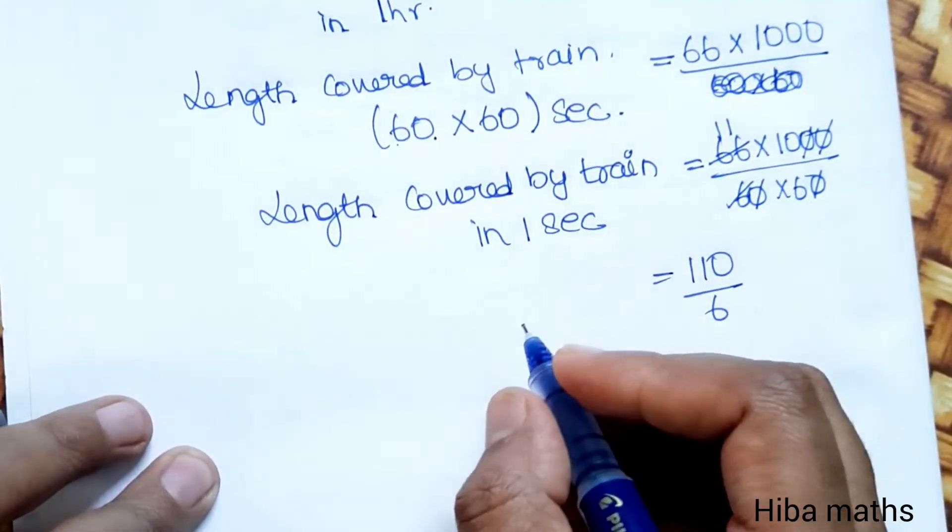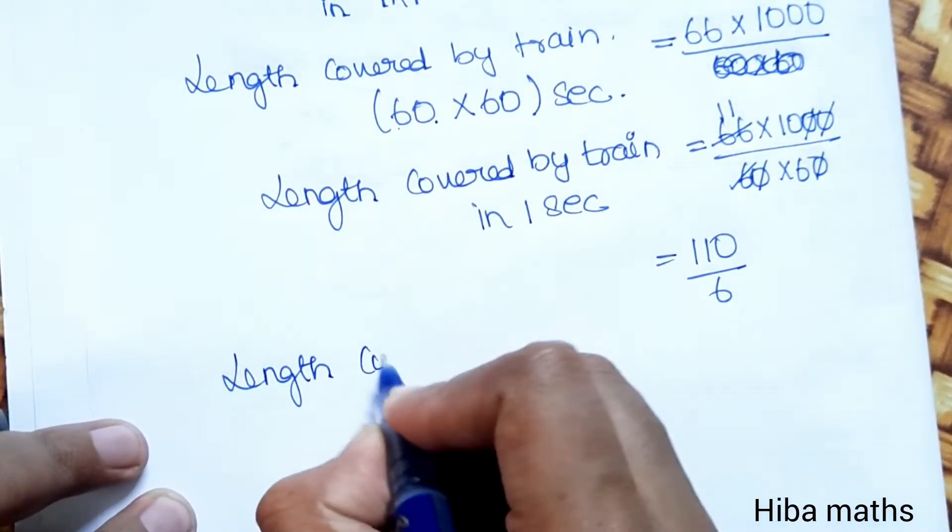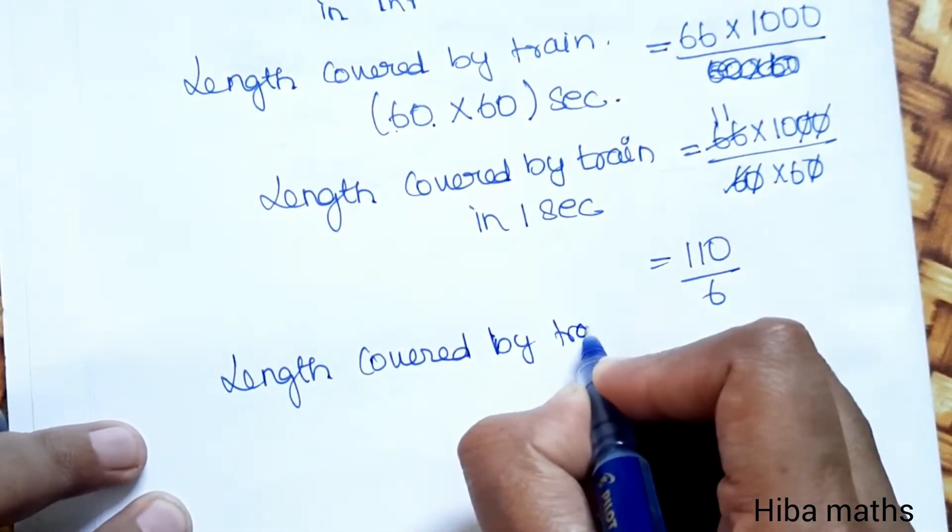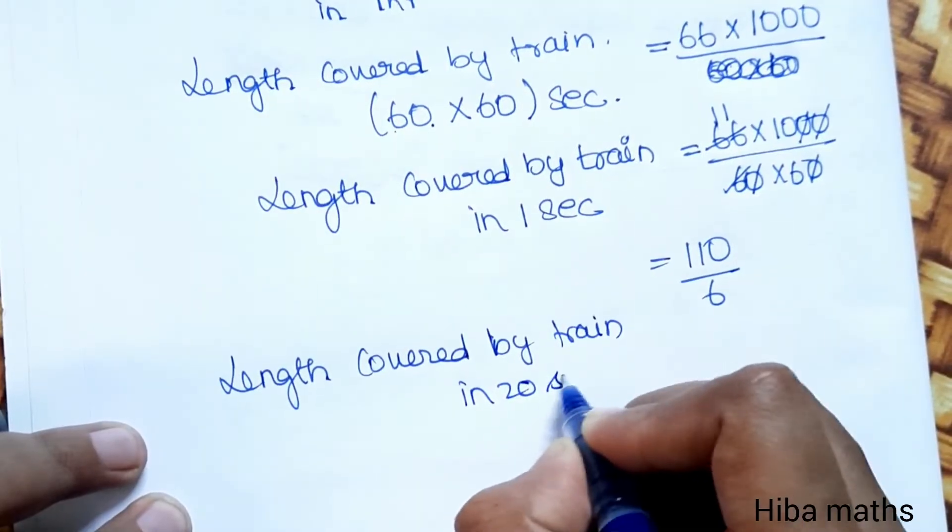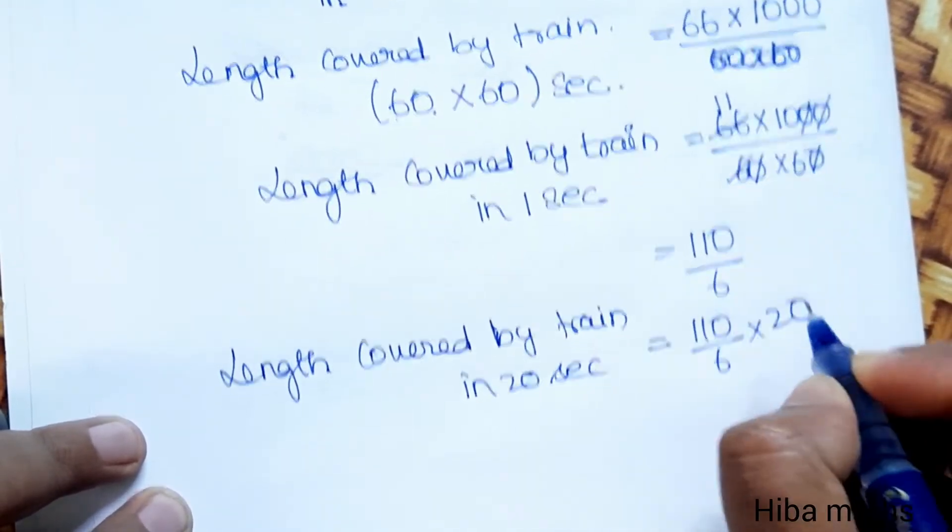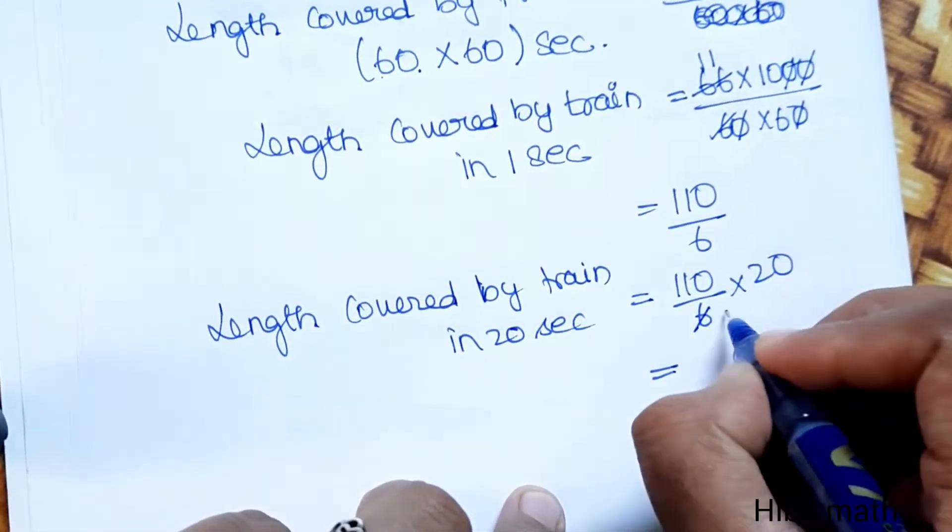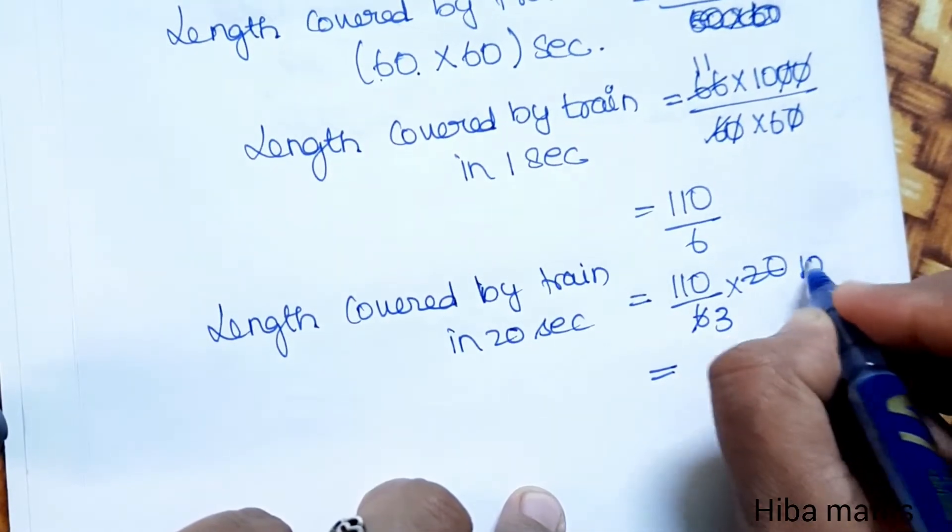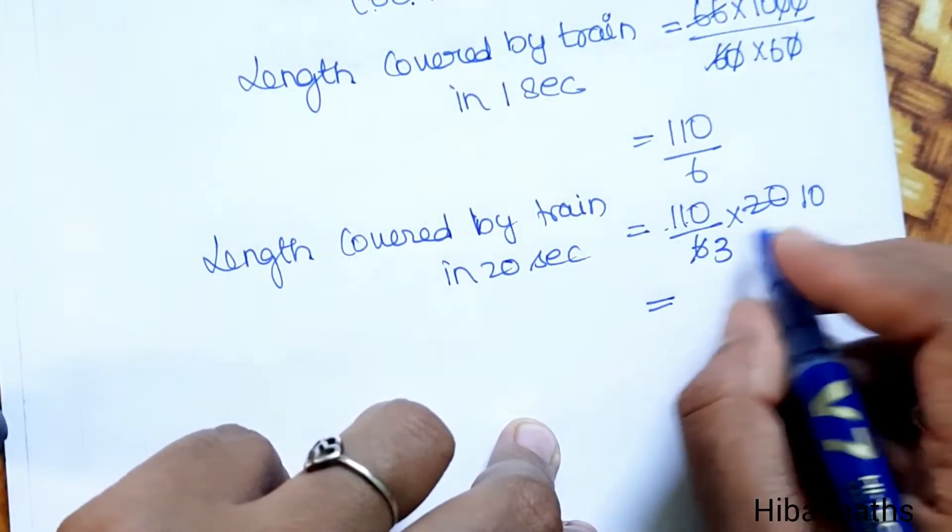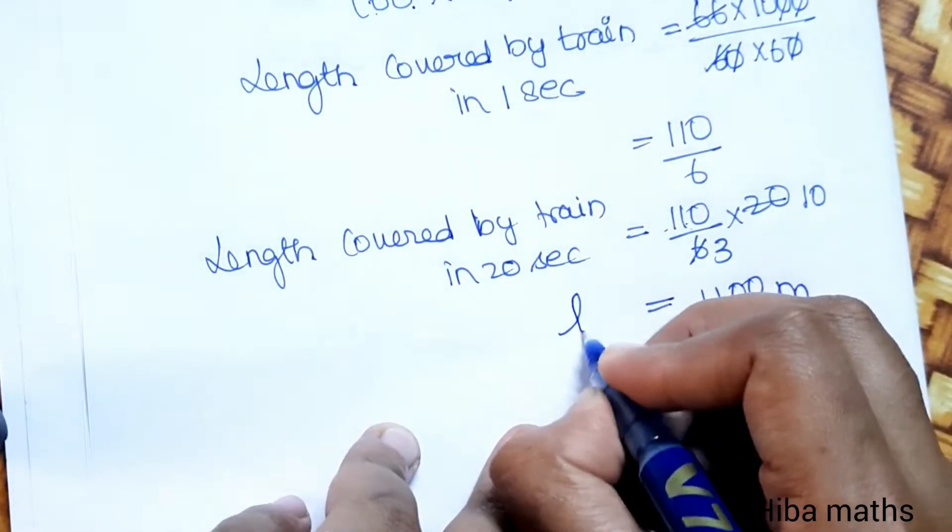Now we will find the length covered by train in 20 seconds. So 110 by 6 into 20. We cancel using 2 tables: 2 times 10 is 20. So 110 into 10 is 1100 divided by 3 meters.